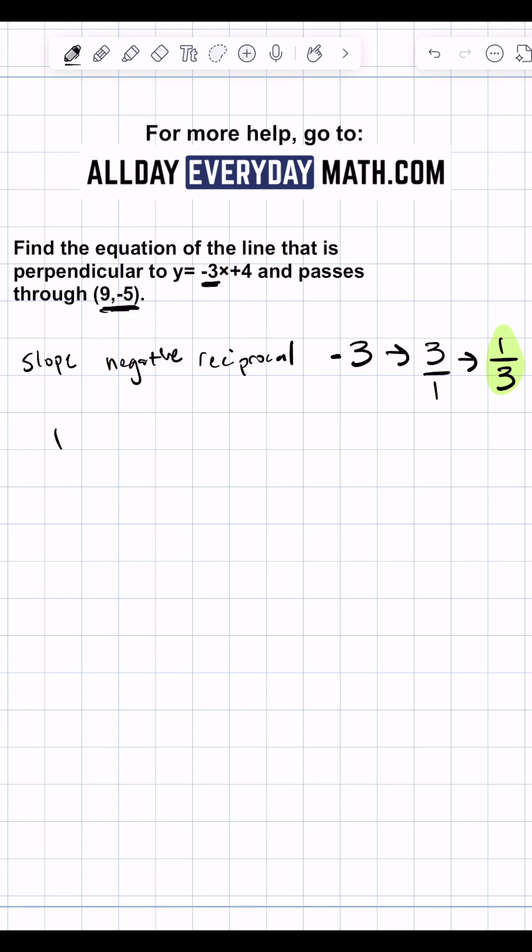Which is y minus y1 equals m times x minus x1. So in our point 9, negative 5, we have x1 and y1. And so now we just plug everything in.